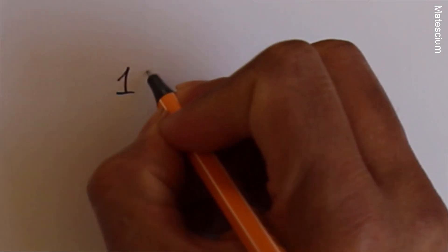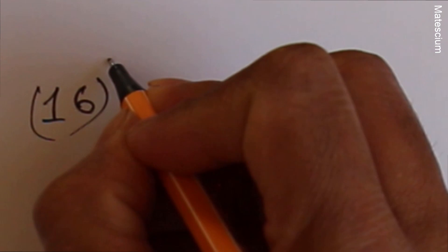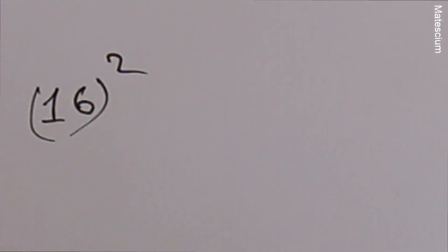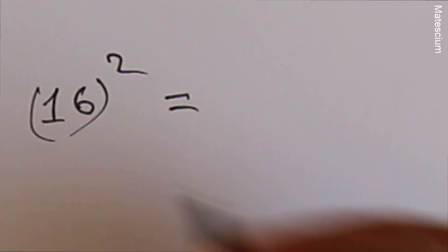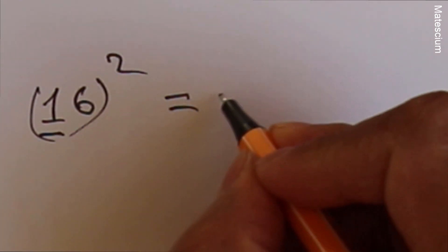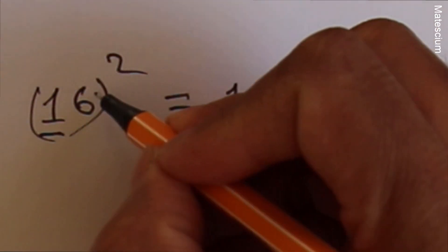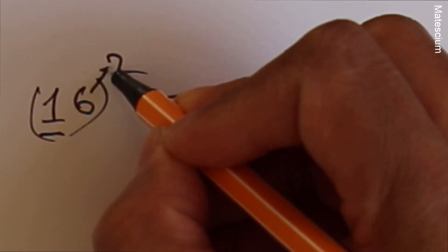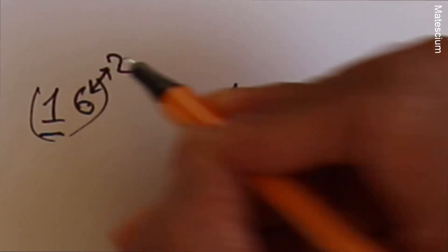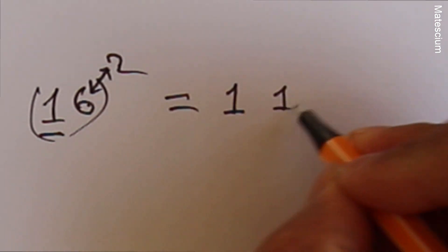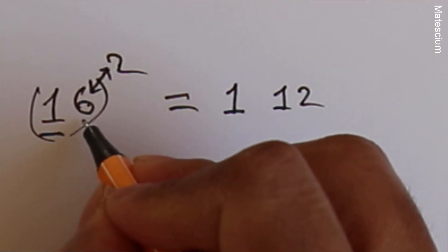Let me show you something different and interesting. Do you know how you can easily calculate the square of any number? Let's say 16². What you have to do is write this 1 here and multiply this 6 with 2. That means 6 by 2 multiplication is 12. Next step is you have to multiply this 6 with itself.